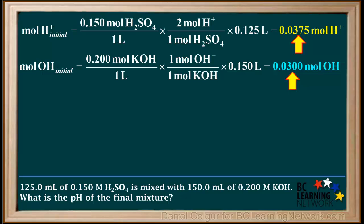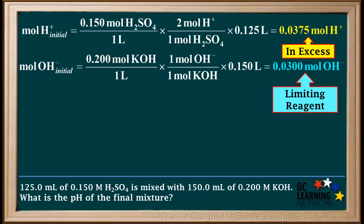Now we'll compare the initial moles of H plus and OH minus. We see that 0.0375, the moles of H plus, is greater than 0.0300, the moles of OH minus. So the H plus is in excess and the OH minus is the limiting reagent.